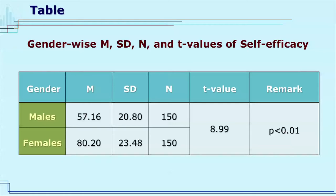Further, the mean score of self-efficacy of female teachers is 80.20, which is significantly higher than that of males, whose mean score of self-efficacy is 57.16. It may therefore be said that females were found to have significantly higher self-efficacy in comparison to their male teacher counterparts.